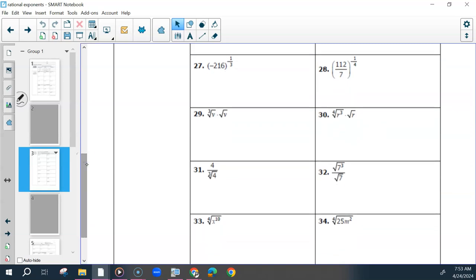So let's start with 29. So how would I write the cube root of V in exponential form? Think about your index. So the 1 3rd, what about the square root of V?